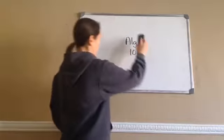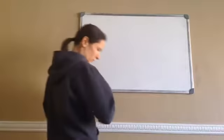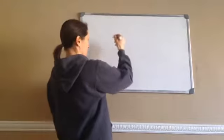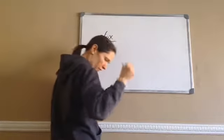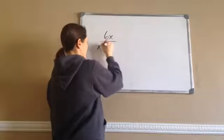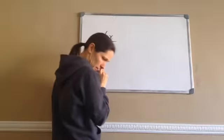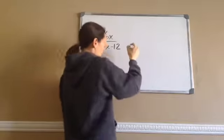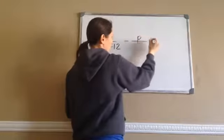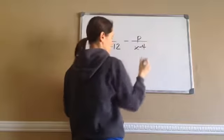Algebra 1, lesson 101. This is on factorable denominators. So what this looks like is a problem like this: 6x over x squared minus x minus 12, and then they want us to subtract p over x minus 4.